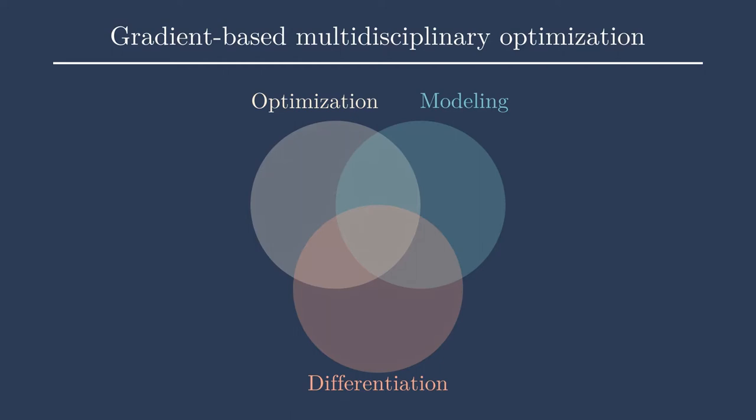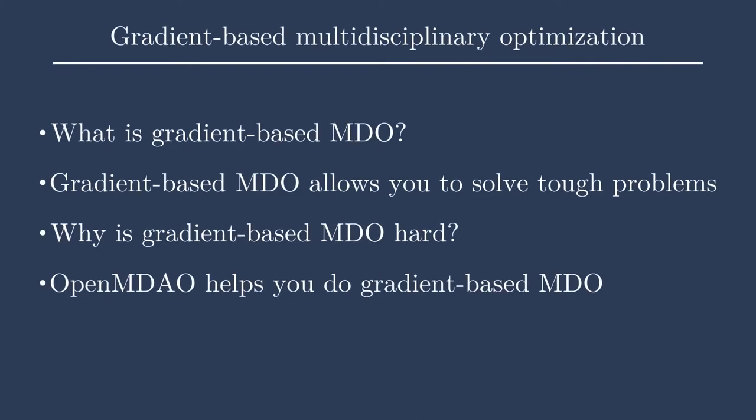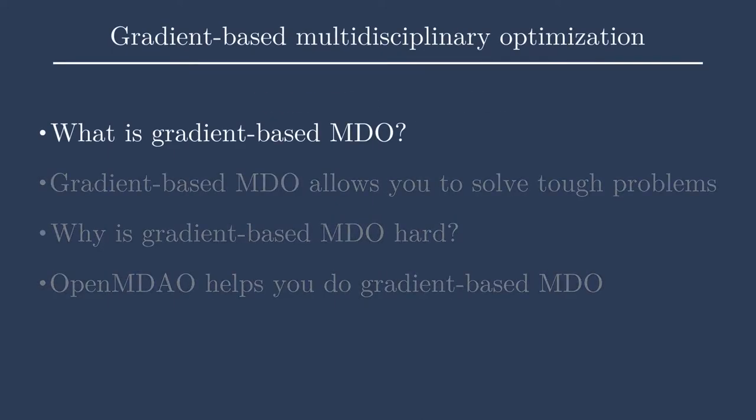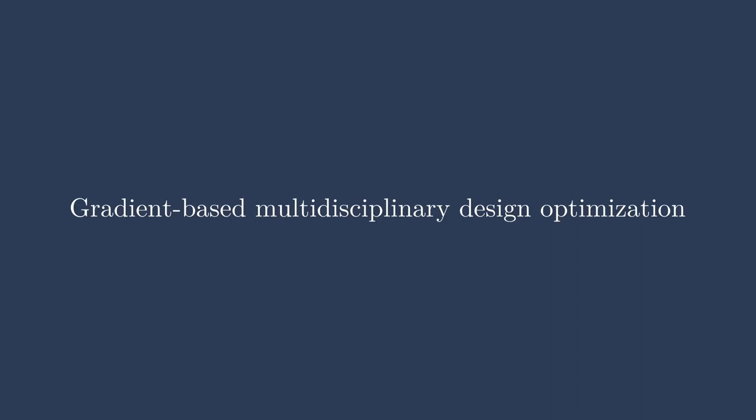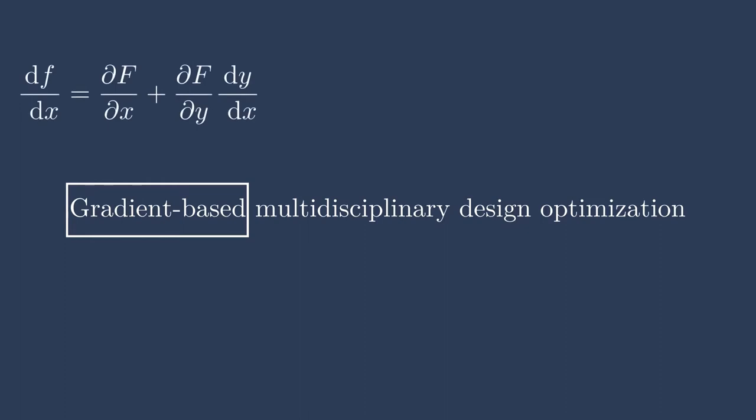You might have guessed that based on the title. I'll go through a few main points here. The first is: what is gradient-based MDO? Let's just spell it out — gradient-based multidisciplinary design optimization. Sometimes I personally get confused if the D in MDO is for disciplinary or design. It's for design, usually. So let's break this down piece by piece. First, we have gradient-based. What does that mean?